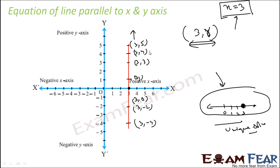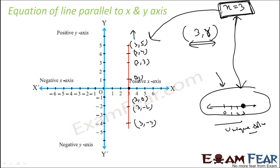If you plot the same equation in the Cartesian system, you will see that it has an infinite number of solutions. If you are treating this as a linear equation in one variable, you plot it on the number line and get a unique solution. But if you treat it as a linear equation in two variables, you plot it in the Cartesian system and get infinite solutions — (3, r) where r can be any real number. This is for a line parallel to the y axis.